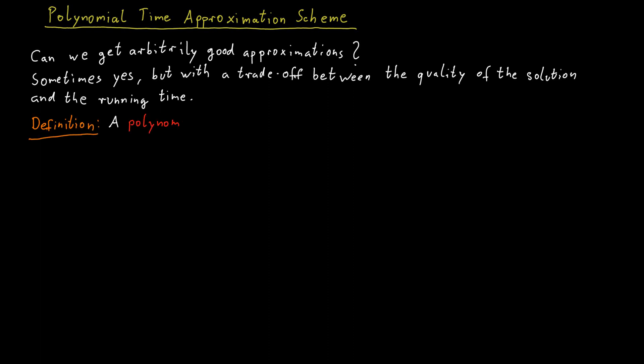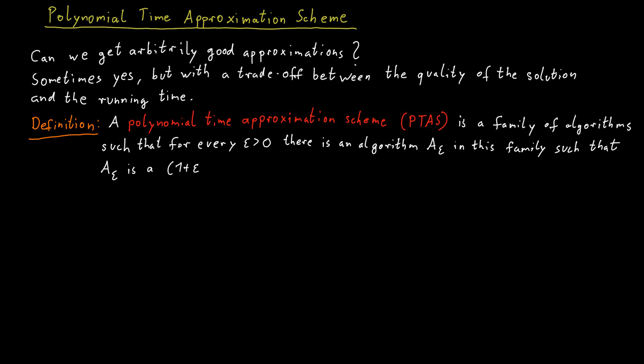A result like this is called a polynomial time approximation scheme. So technically, a polynomial time approximation scheme is not a single algorithm. It's a family of algorithms that for any positive constant epsilon, there is an algorithm in this family such that that algorithm produces a 1 plus epsilon approximation. Well-known examples of problems where such a result is possible is load balancing and the Euclidean traveling salesperson problem.